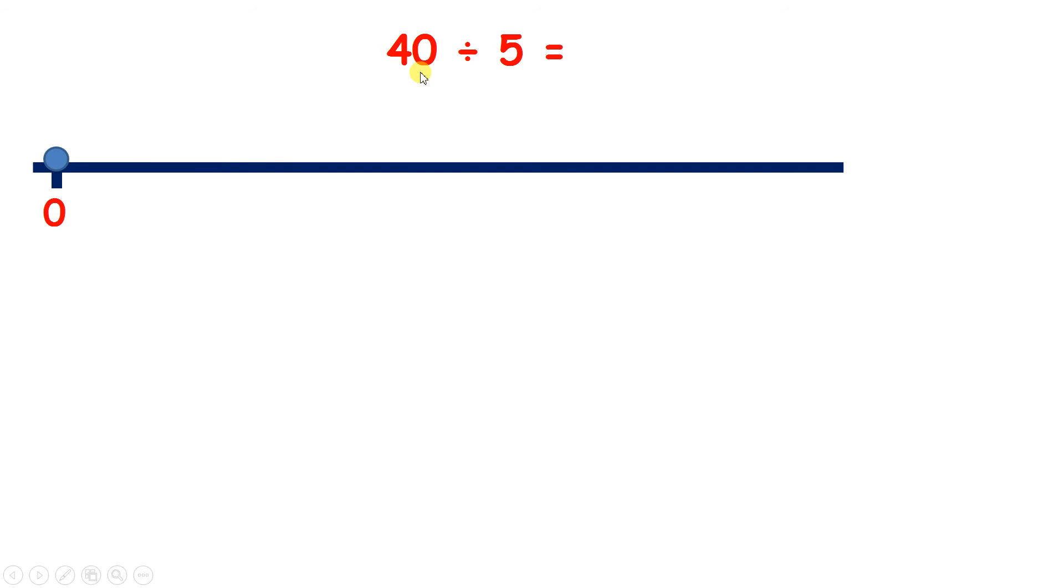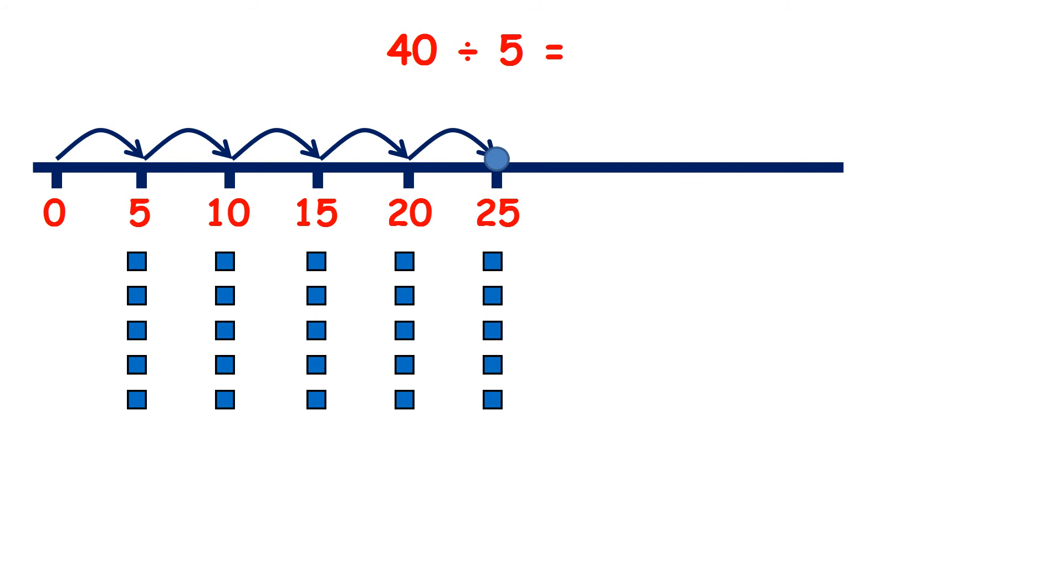Now 40 divided by 5. So let's count up in steps of 5: 5, 10, 15, 20, 25, 30, 35, 40.